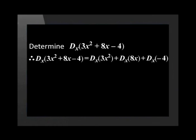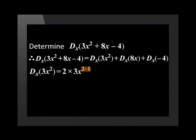Now let's get back to the problem. To determine the derivative of 3x squared plus 8x minus 4, we will take the derivative of 3x squared, followed by the derivative of 8x, and then the derivative of minus 4. Let us determine the derivative of 3x squared. In the first step, we multiply the original power 2 by the coefficient 3. In the second step, we subtract 1 from the original power 2. Therefore, the derivative of 3x squared is equal to 6x.